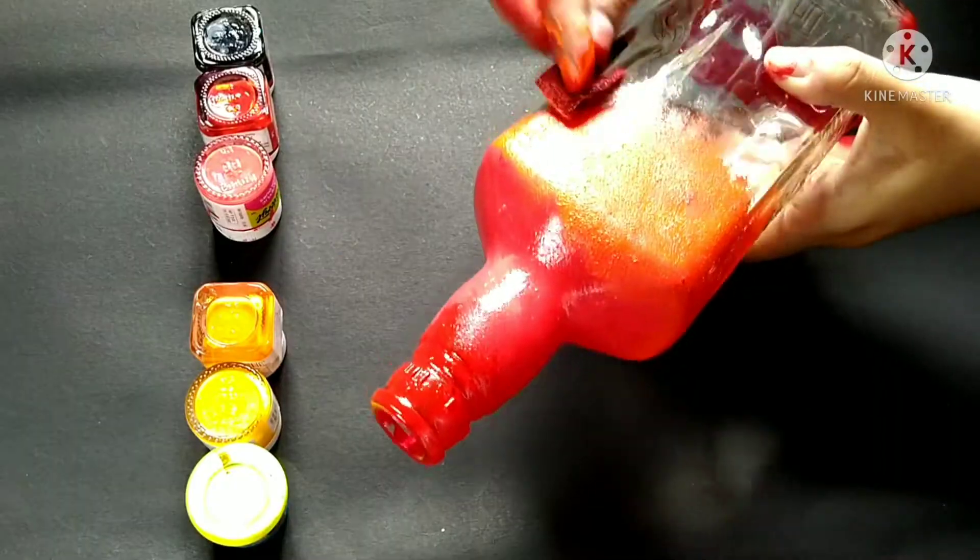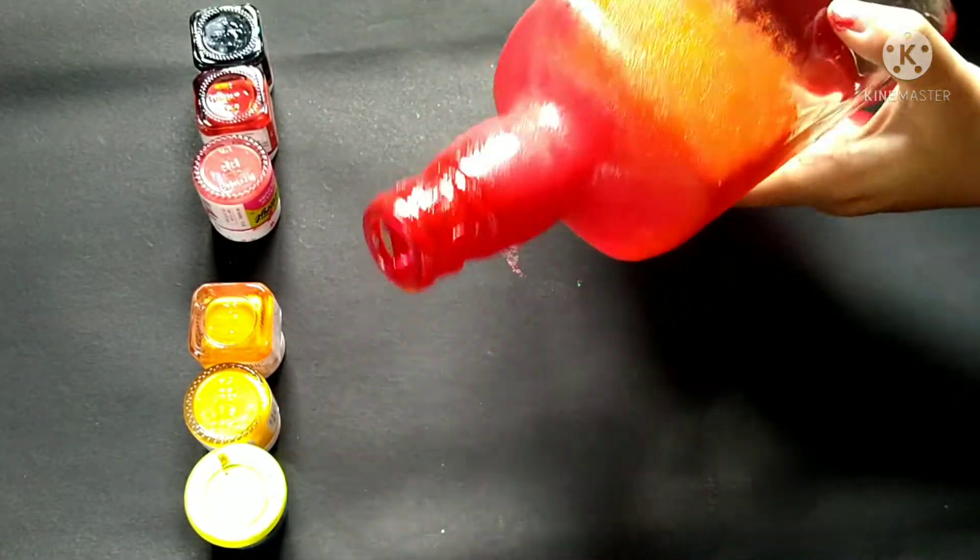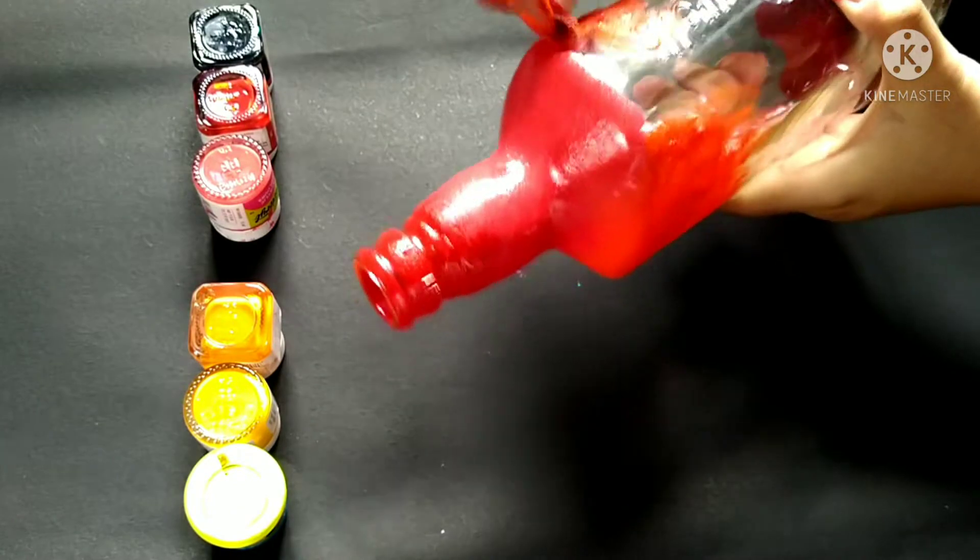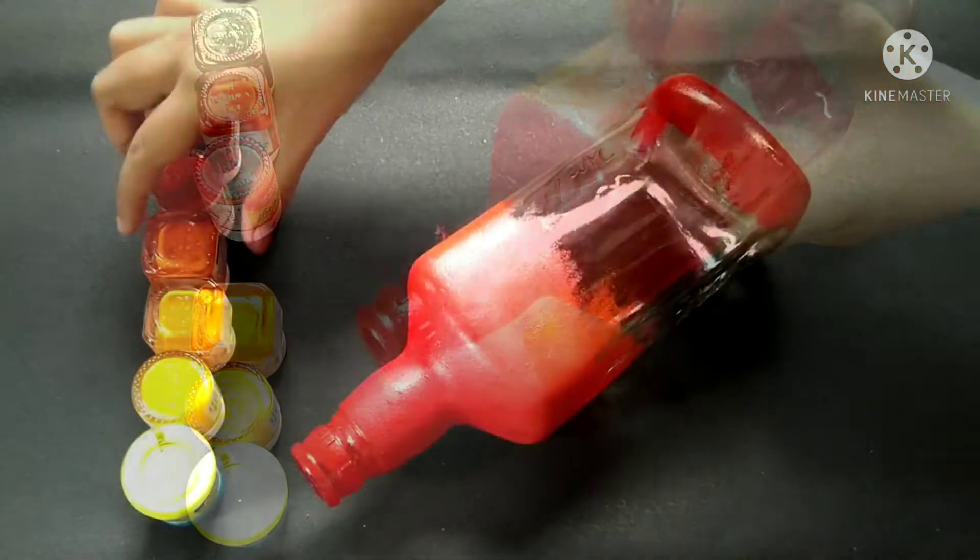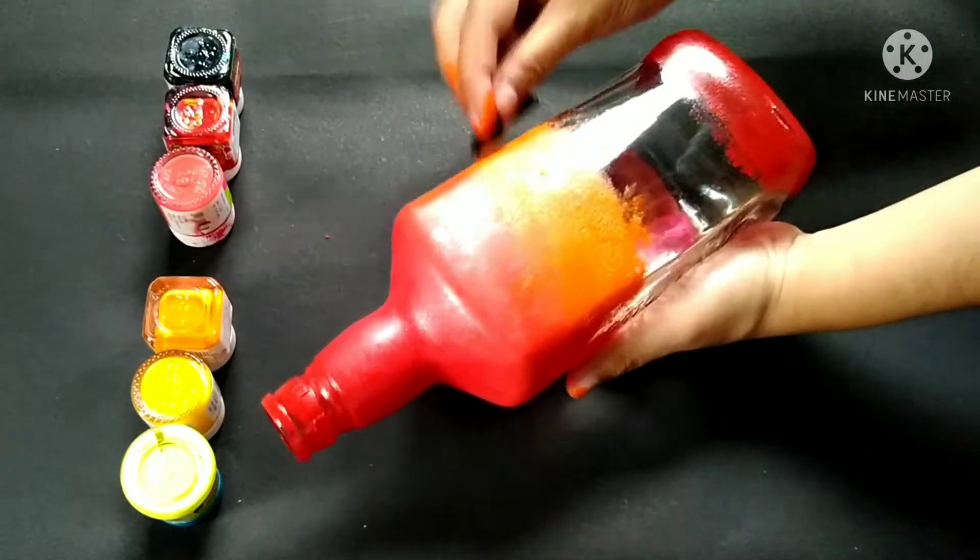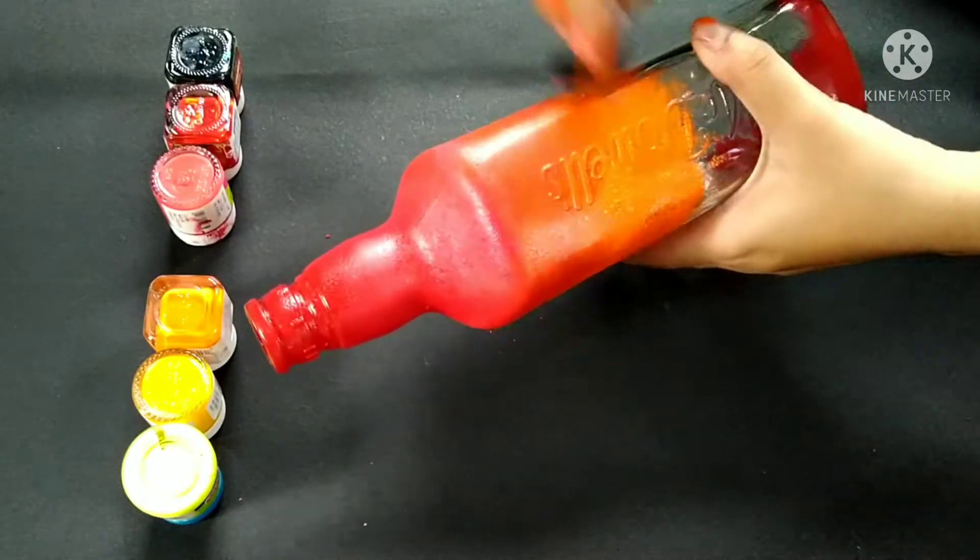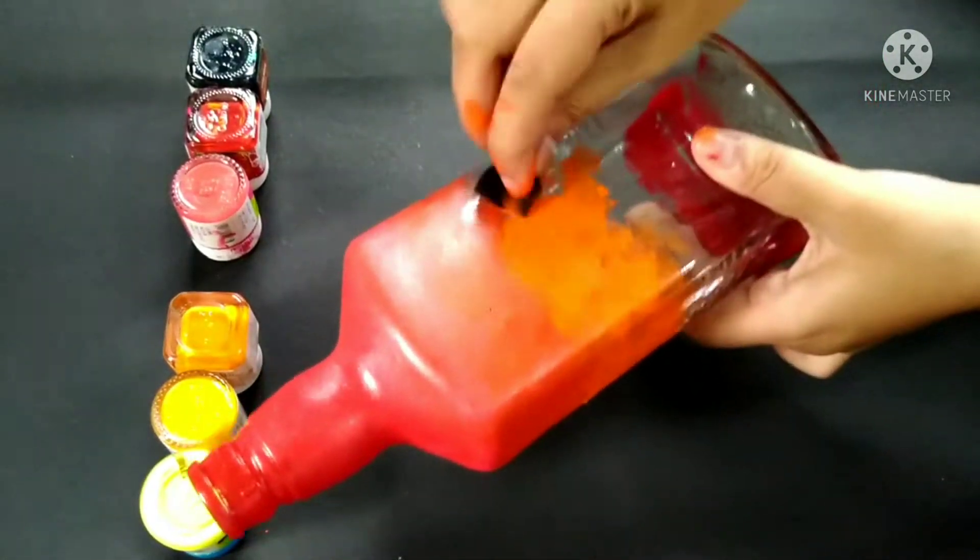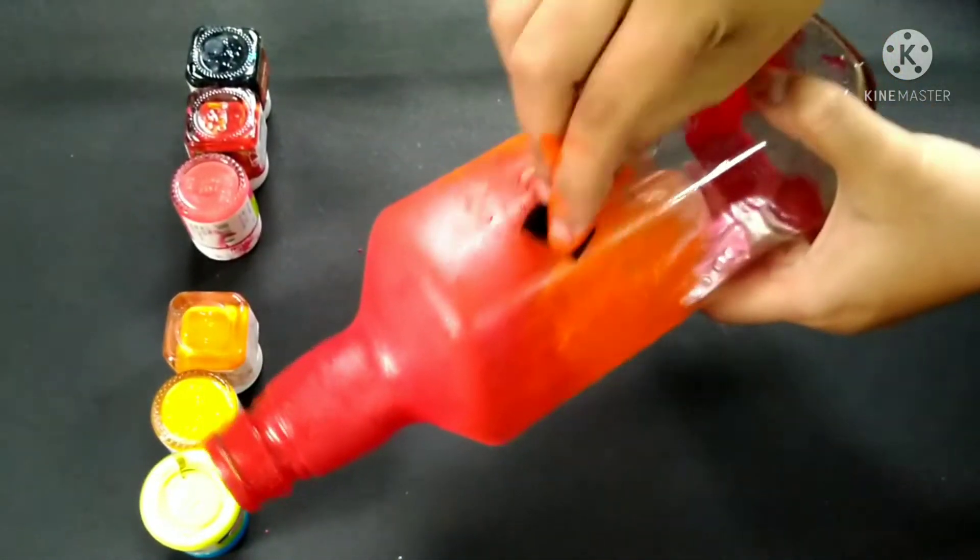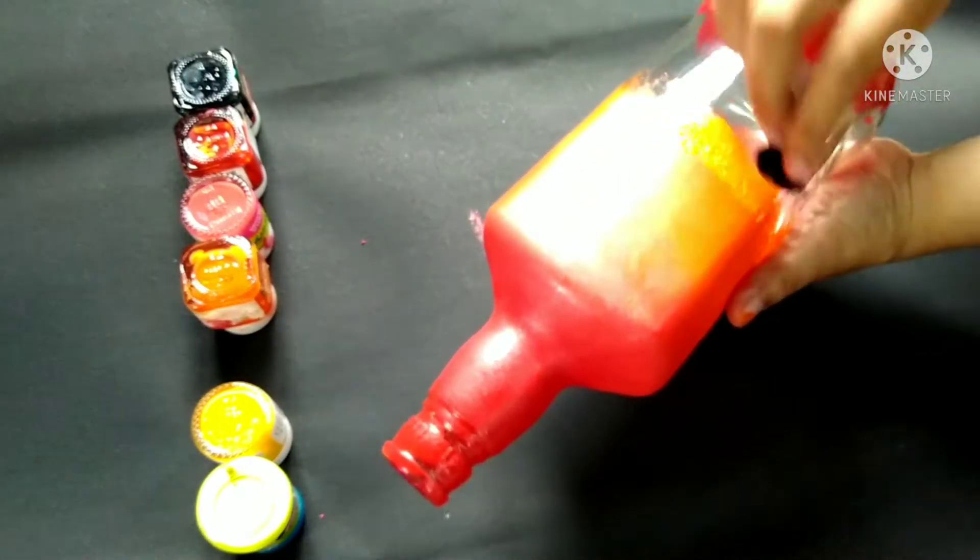You can see, I have arranged all the colors from top to bottom in order. First black, then crimson, coral red, orange, chrome yellow, golden yellow and lemon yellow. This is how I will apply the colors to the bottle. Make sure you don't use water while you apply this. Otherwise, you don't get the same result.